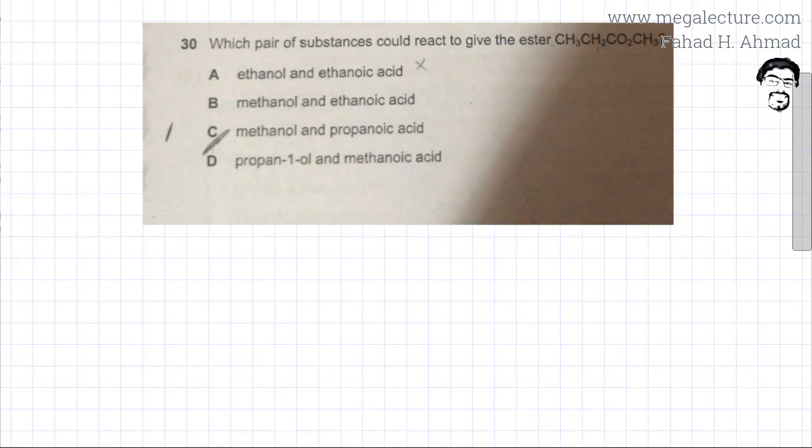The following question reads: which pair of substances could react together to give this ester CH3, CH2, CO2 and CH3. So the first thing I'm going to try and do is if you cannot read this properly, I'm going to draw this ester.